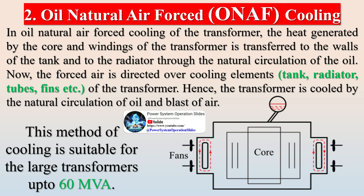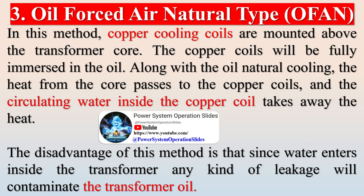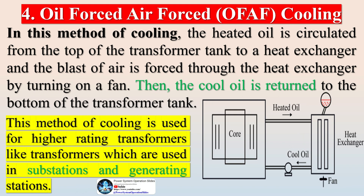In Oil Natural Air Forced (ONAF) cooling, the heat generated by the core and windings is transferred to the walls of the tank and to the radiator through natural circulation of the oil. Forced air is then directed over the cooling elements — the tank, radiator, tubes, fins, etc. — of the transformer. Hence, the transformer is cooled by natural circulation of oil combined with a blast of air. This method of cooling is suitable for large transformers up to 60 MVA.